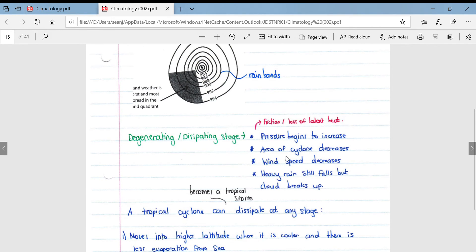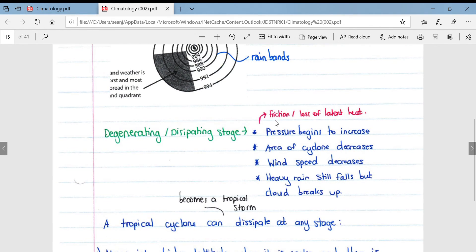If we look at the degenerating or dissipating stage, this usually happens because of friction or a loss of latent heat, most commonly when the cyclone makes landfall. So the pressure then begins to increase, the area of the cyclone decreases, wind speeds decrease, and heavy rain still falls but the clouds begin to break up.